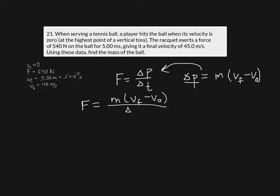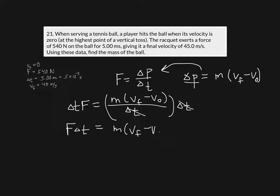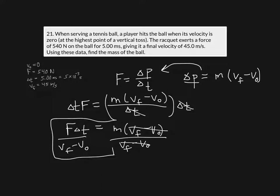Now we can rearrange this equation to get mass by itself. Multiplying both sides by Δt gives F times Δt equals mass times (v_final minus v_initial). Then dividing both sides by (v_final minus v_initial), those terms cancel on the right, leaving mass equals force times change in time divided by (v_final minus v_initial).